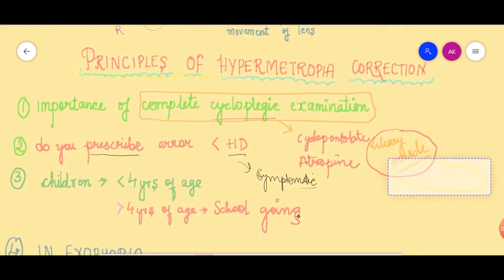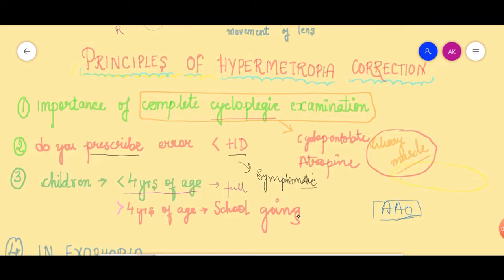What do we do in cases of children? There are certain guidelines from the American Academy of Ophthalmology regarding when to prescribe glasses in children. Generally speaking, if a child is less than four years of age and requires hypermetropic correction, such a child will usually accept the full amount of cycloplegic hypermetropic error — whether it is plus five, plus six, or plus seven diopters. Since such a child is not yet going to school, visual demands are not much, and they will accept full correction.